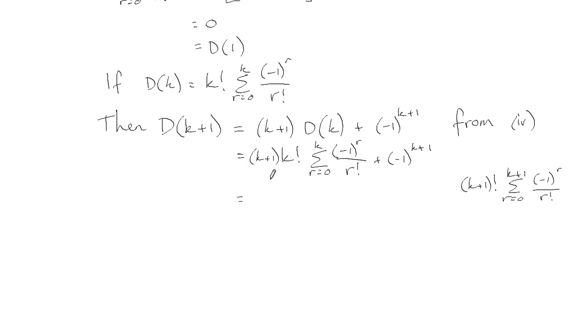So the first thing you might notice is you've got this k plus 1 times k factorial, and that's actually the same as k plus 1 factorial. So we can go ahead and replace that. And also what we want to have is like k plus 1 factorial times one thing. What we have here is k plus 1 factorial times that and then plus this other thing.